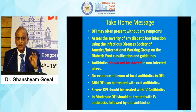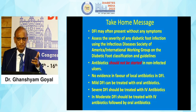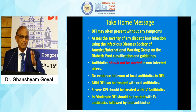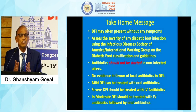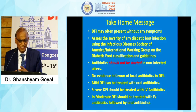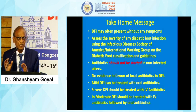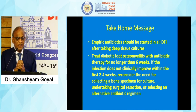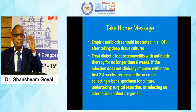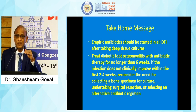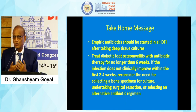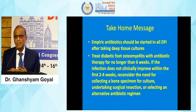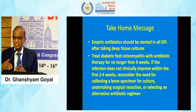Mild DFI can be treated with oral antibiotics. If you think there is both gram-positive and gram-negative involvement, start with co-amoxiclav plus a quinolone — either ciprofloxacin or levofloxacin — because the maximum evidence supports these and they are also effective against Pseudomonas. Severe DFI should be treated with IV antibiotics from the beginning. Moderate DFI should be treated with IV antibiotics followed by oral antibiotics. Empiric antibiotics should be started in all DFI after taking deep tissue cultures — do not wait for the culture report to start; start empirically according to guidelines or your hospital's antibiotic policy.